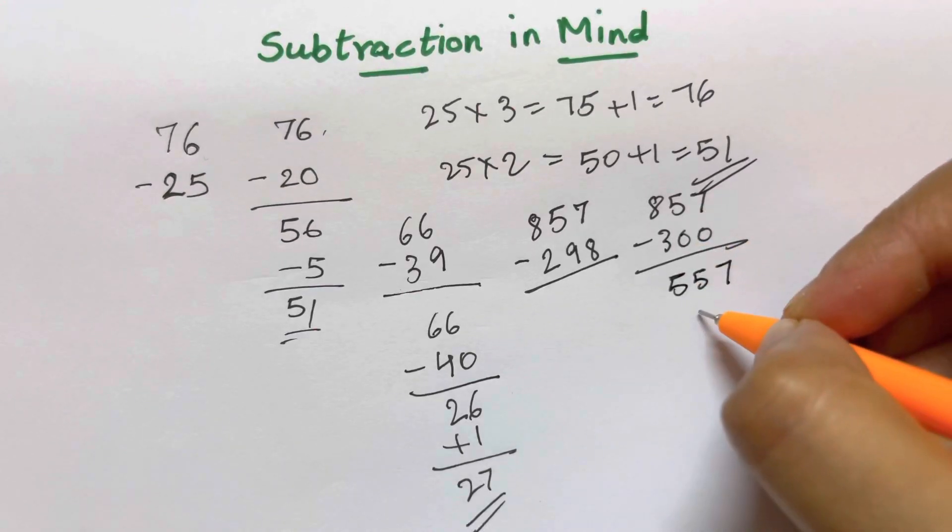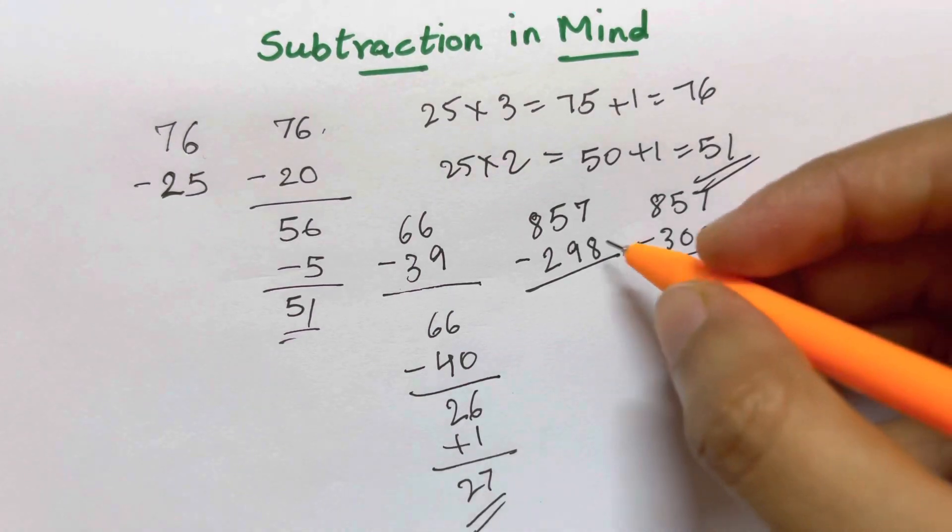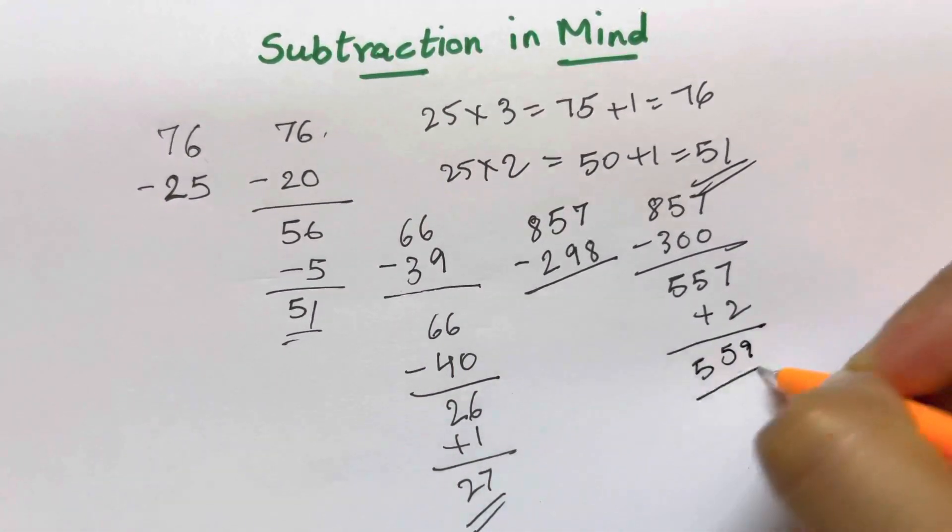557, add back plus 2, 300. Because 298, 299, 300. You subtracted more 2. So you're adding back 559. This is what you're going to do it in mind.